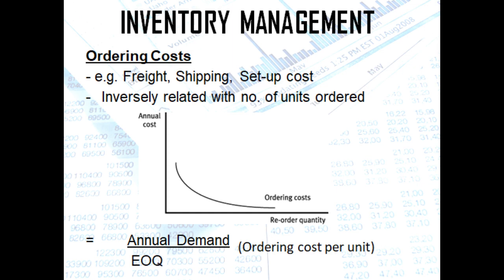For example, if you will order goods from Manila going to Angeles and you ordered 10 units at 500 pesos, the cost is 50 pesos per unit. But if you increase that to 20 units for the same delivery, your unit cost drops to just 25 pesos. So ordering cost is inversely related to the number of units ordered. Total ordering costs is computed as: annual demand divided by EOQ, multiplied by the ordering cost per unit.